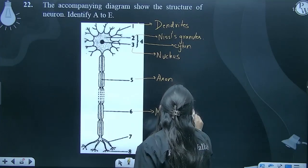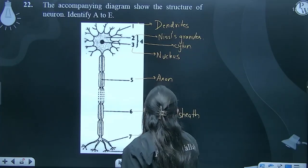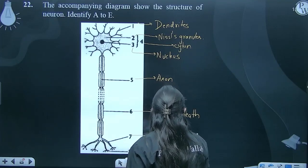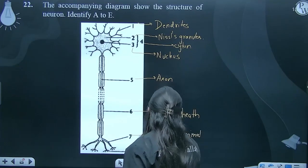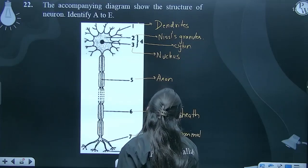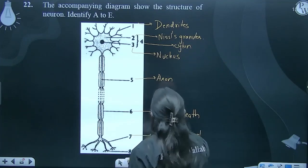What? Myelin sheath. Now seventh is axon terminal, axon terminal. And eighth one is synaptic knob. Clear? You can match these now.